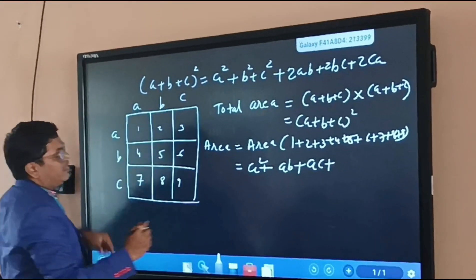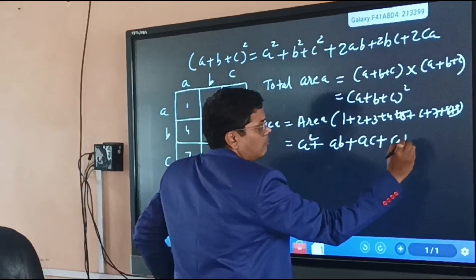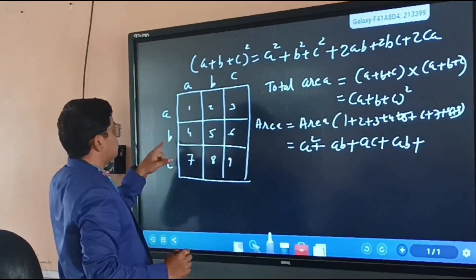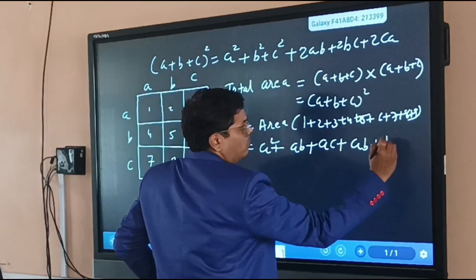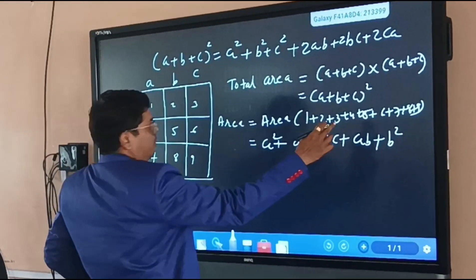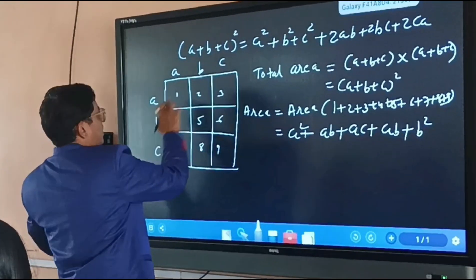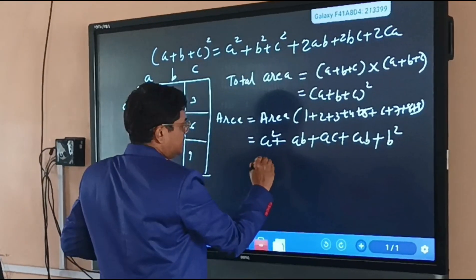Fourth part, that is b into a, that is ab. Fifth part, that is b into b, that is b squared. Sixth part, that is b into c, that is bc.